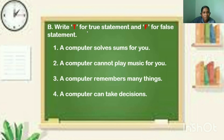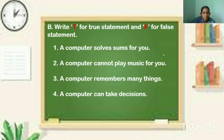Then write T for true statement and F for false statement. All of you read the statement carefully. If the statement is true, then write T. If the statement is false, then write F. First one — a computer solves sums for you. Is it true or false? Yes, it's a true statement. Write the letter T. First one — a computer solves sums for you — true statement.